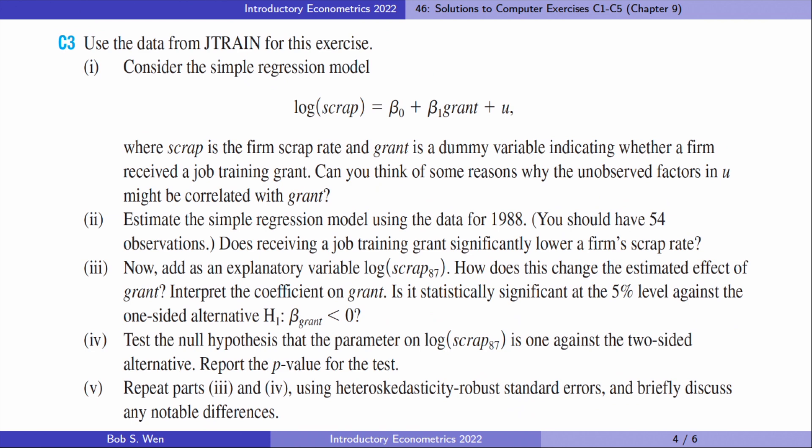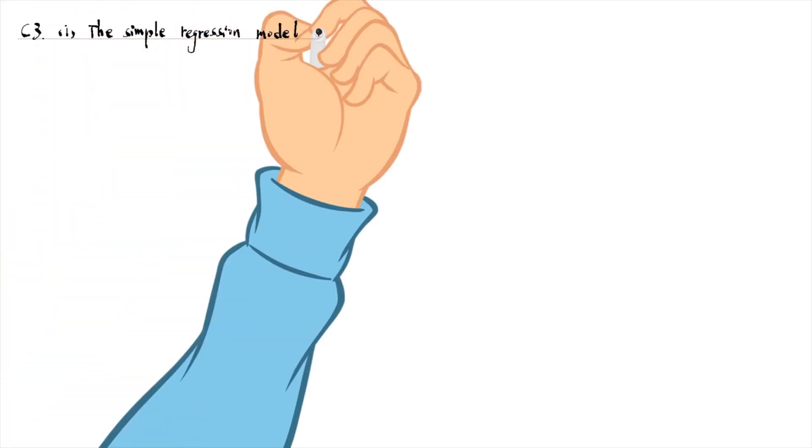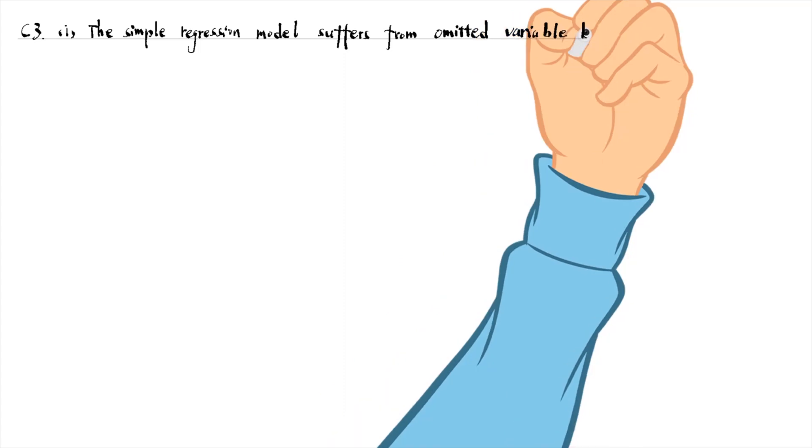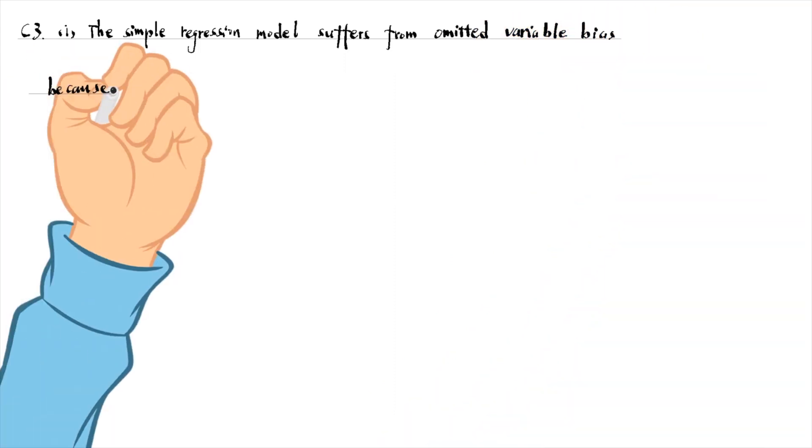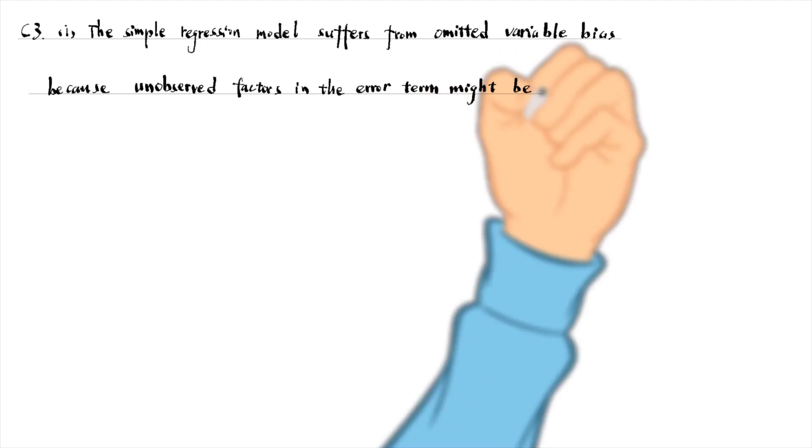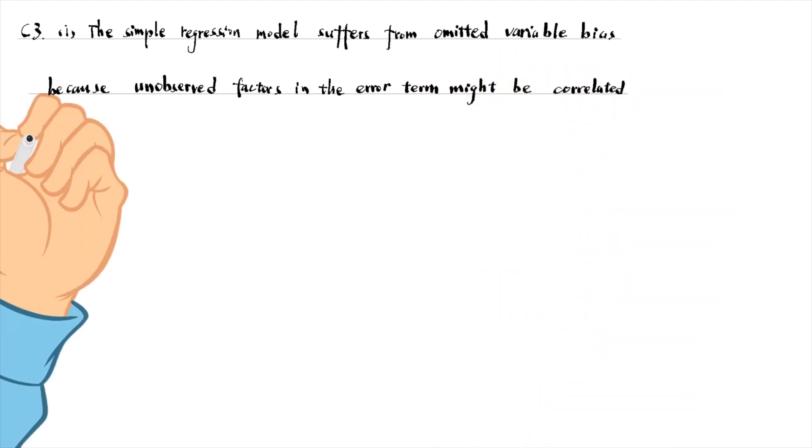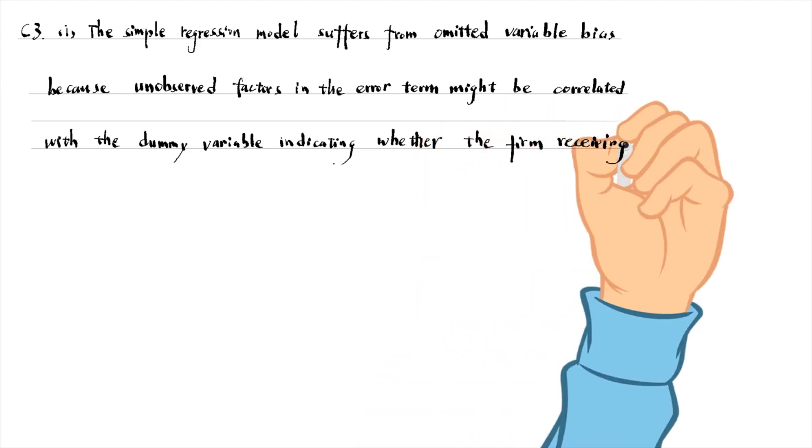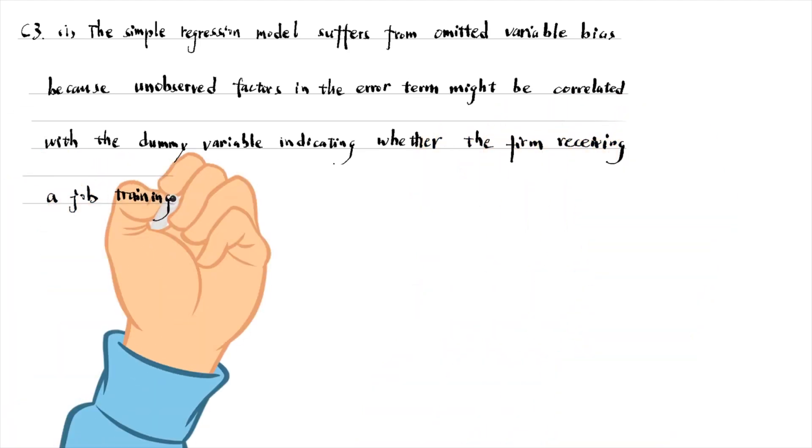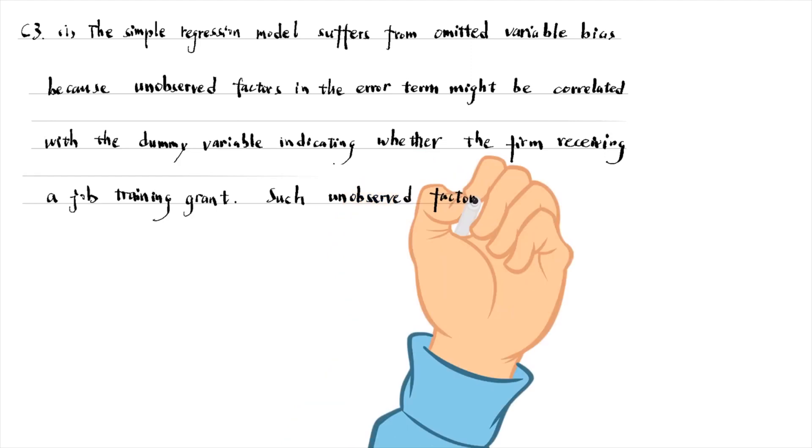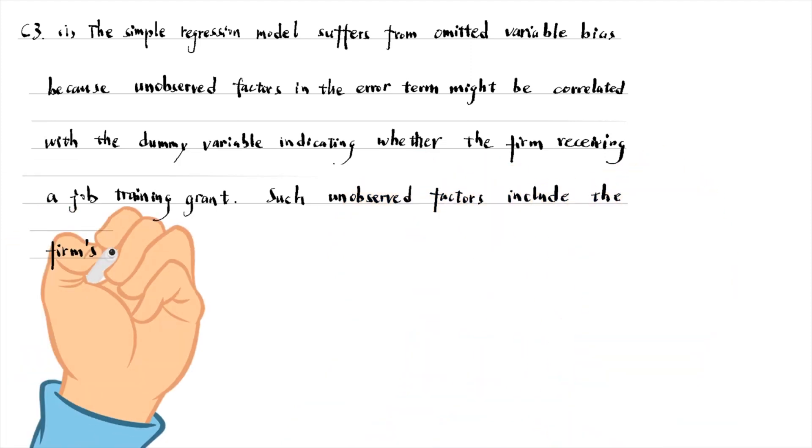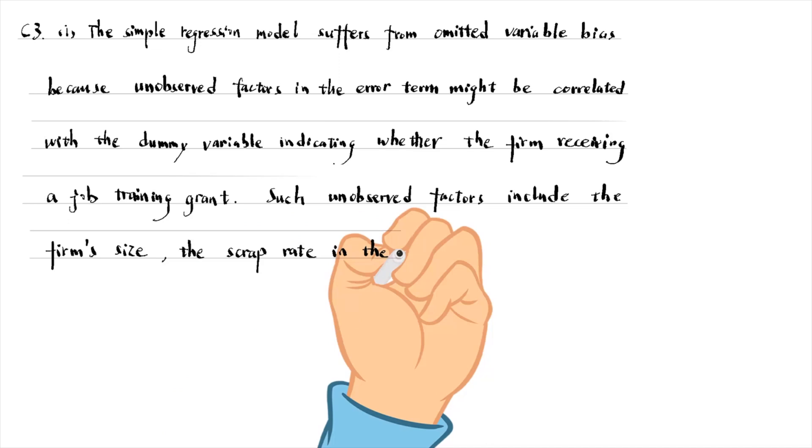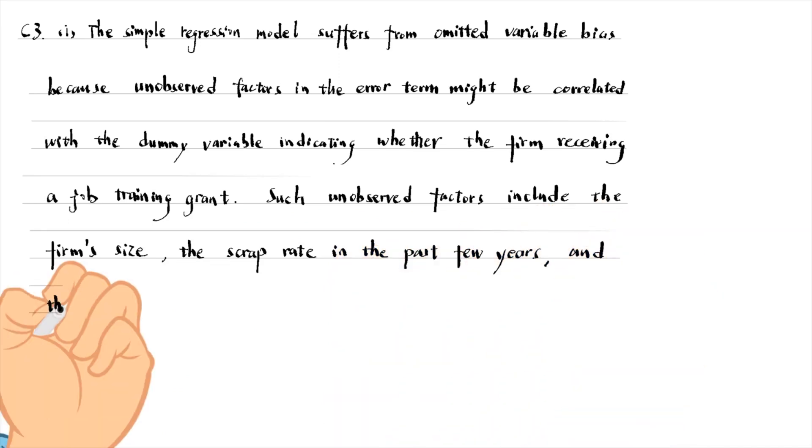Let's solve the third computer exercise. The simple regression model suffers from omitted variable bias because unobserved factors in the error term might be correlated with the dummy variable indicating whether the firm received a job training grant. Such unobserved factors include the firm's size, the scrap rate in the past few years, and the education level of the workers.